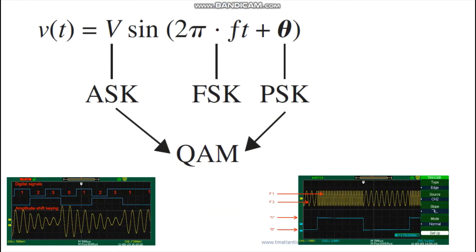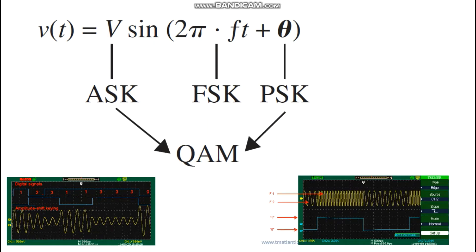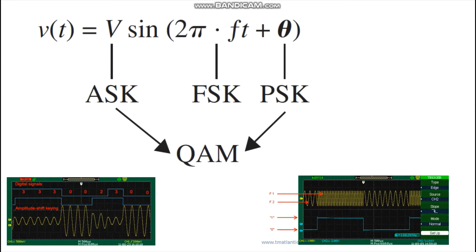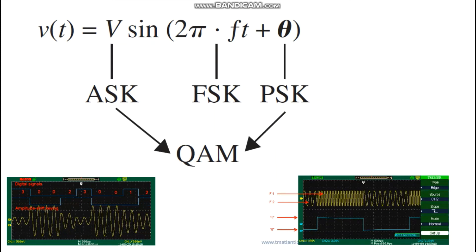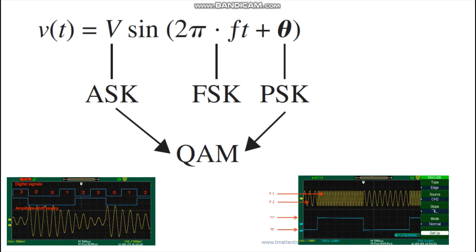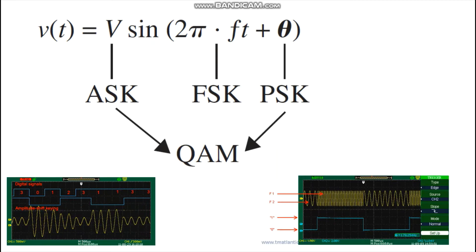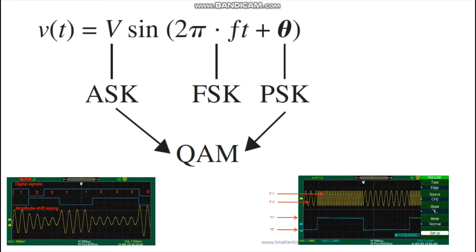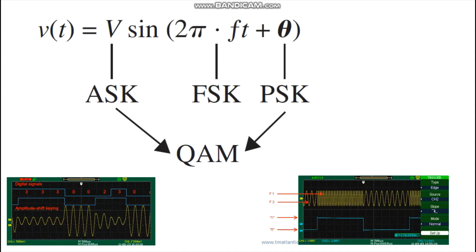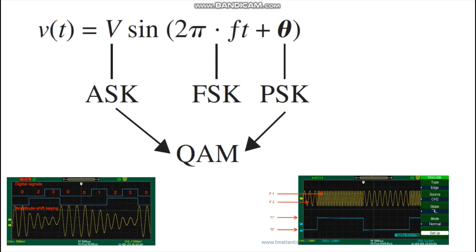Consider this equation: v(t) = V·sin(2πft + θ). From this equation, if the information signal is digital and the amplitude V of the carrier is varied proportional to the information signal, a digitally modulated signal called amplitude shift keying (ASK) is produced.